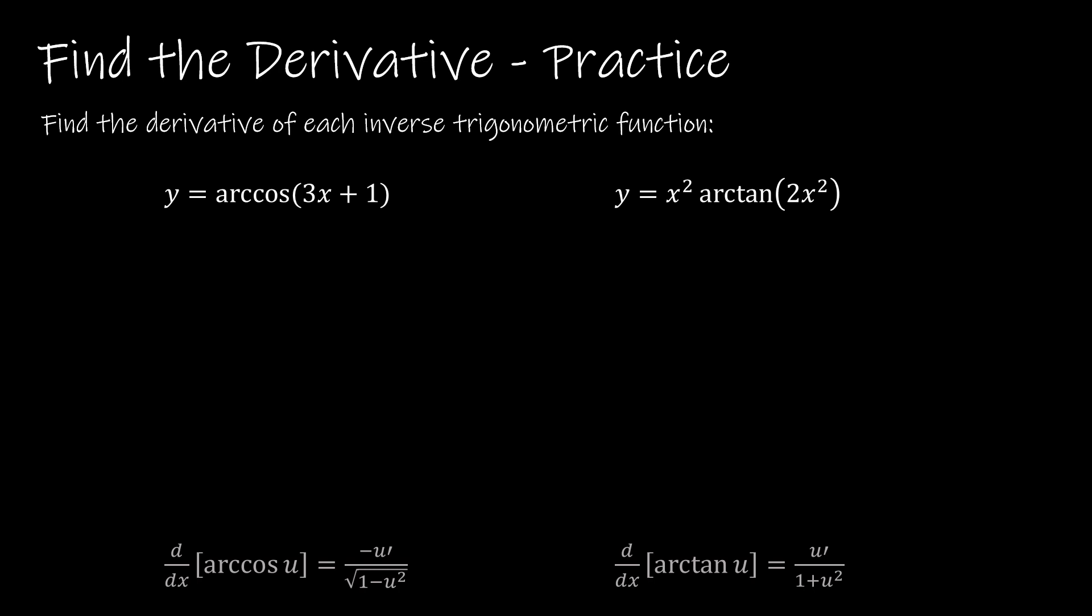For our first question, we have y equals arccosine of 3x plus 1. Finding the derivative is just as easy as identifying u and u prime. So in this case, u is 3x plus 1 because that is what I'm taking the arccosine of. And that's what it tells me to do. u prime is the derivative of 3x plus 1, which is 3.